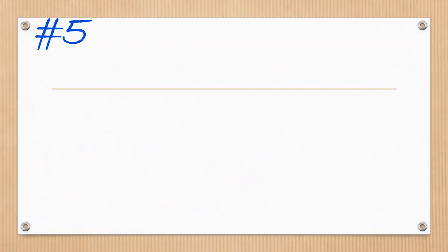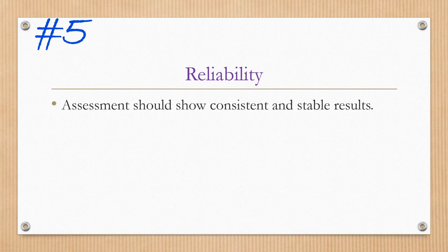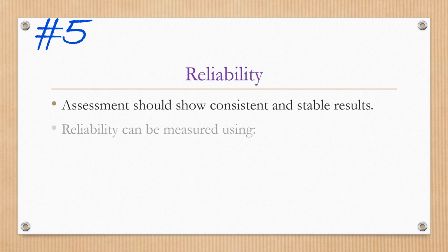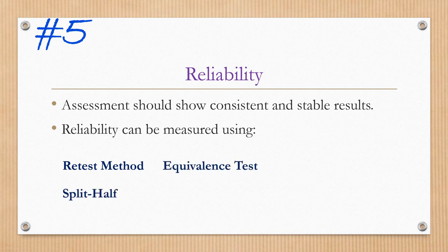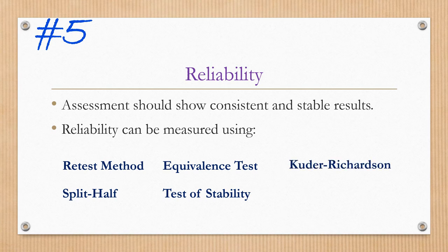The fifth principle is reliability. Assessment should show consistent and stable results. Reliability can be measured using retest method, split-half, equivalence test, test of stability, Kuder-Richardson, either KR20 or KR21, and Cronbach's alpha. And among of these reliability tests, we usually use Cronbach's alpha since it is applicable to different kinds of assessment.